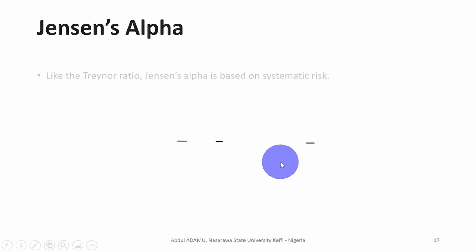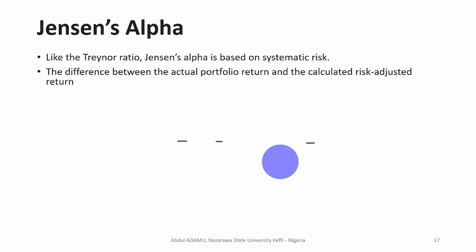The Jensen alpha, like Treynor ratio, is based on systematic risk. This uses beta rather than the standard deviation of a portfolio. The difference between the actual portfolio return and the calculated risk-adjusted return is what we know as the Jensen alpha.